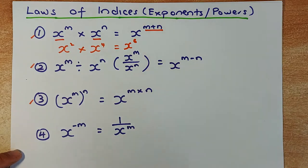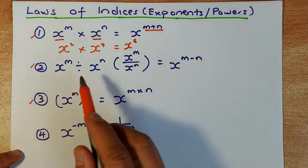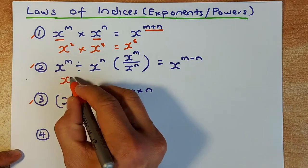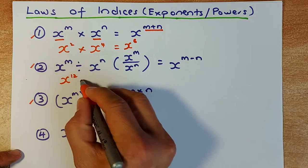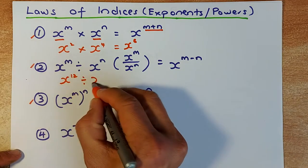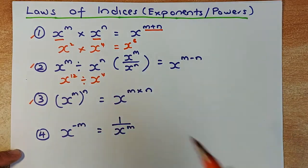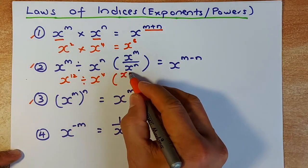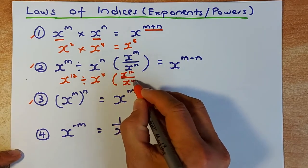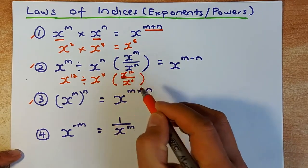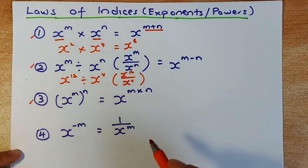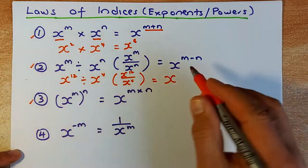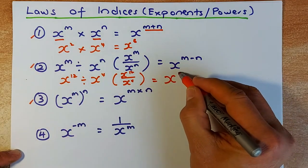Law 2: if you have x to the m divided by x to the n, you subtract the powers. For example, x to the 12 divided by x to the 4 — you take away the power, so 12 minus 4 gives you x to the power of 8.